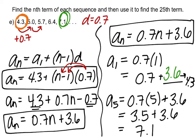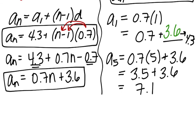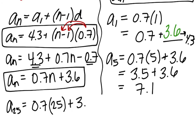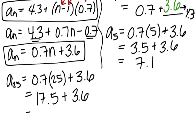To find the 25th term, substitute 25 for n: 0.7 times 25 plus 3.6. That's 17.5 plus 3.6, which gives us 21.1. The 25th term of our sequence is 21.1.